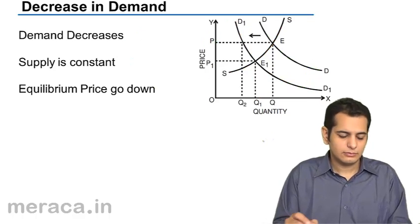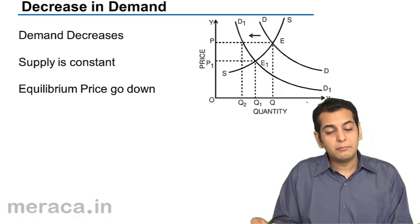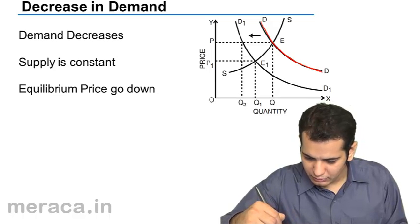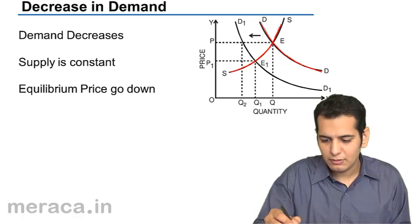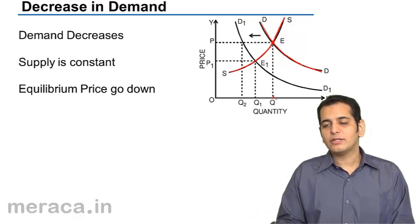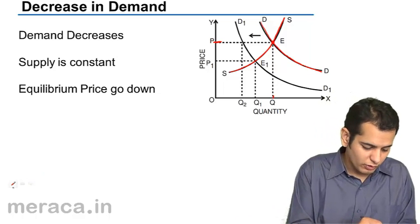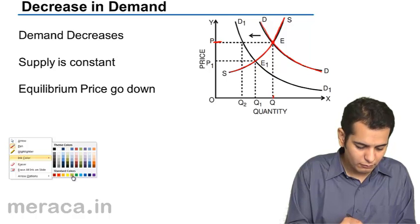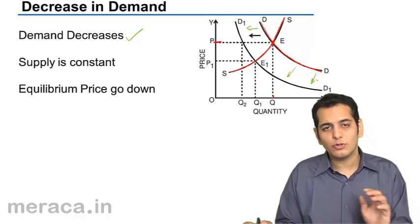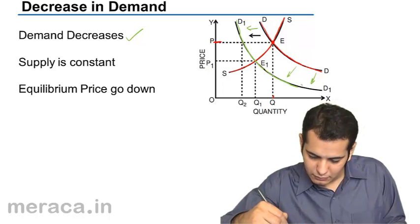The next case is where only the demand is decreasing whereas the supply is remaining constant. We see that this is the original demand curve and this is the original supply curve, and they are meeting at point E. So Q is the equilibrium quantity and P is the equilibrium price. But in this case, what is happening is the demand is decreasing. The demand curve will shift inwards or leftwards, and a new demand curve will get formed.